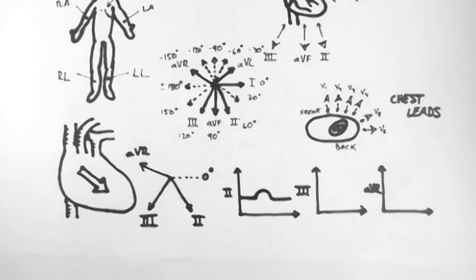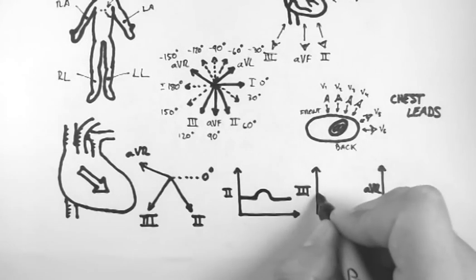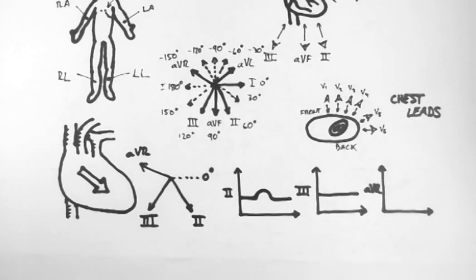Because lead 3 is perpendicular to the direction of depolarisation, there will be no change in the graph.